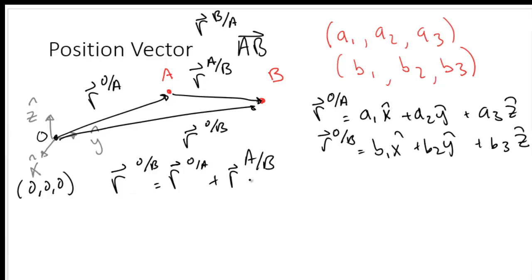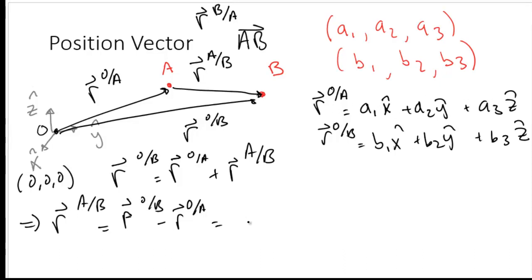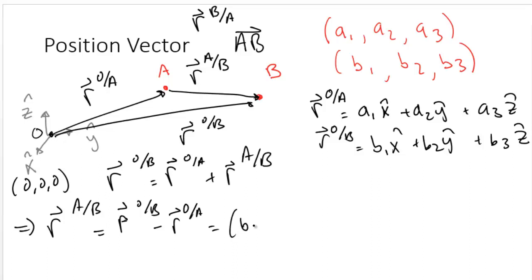But remember we wanted to describe R A to B. So rearranging, R A to B equals R O to B minus R O A. Using these two vectors, we can describe this mathematically as (B1 minus A1) X hat plus (B2 minus A2) Y hat plus (B3 minus A3) Z hat.